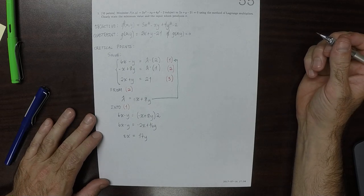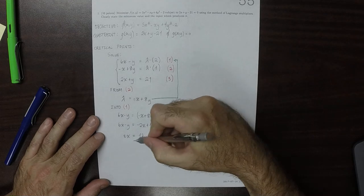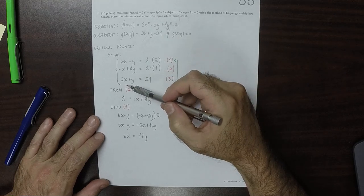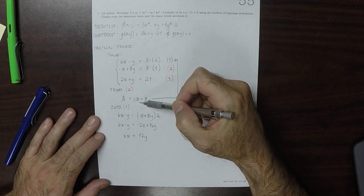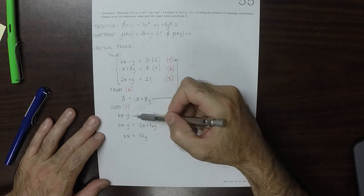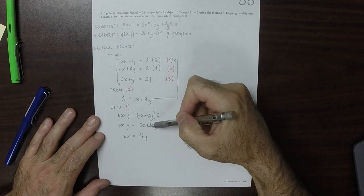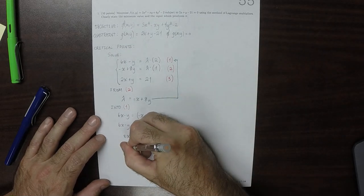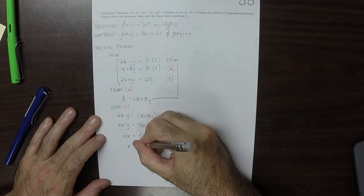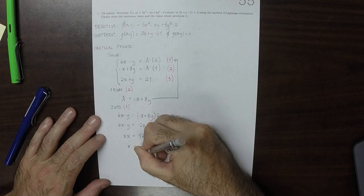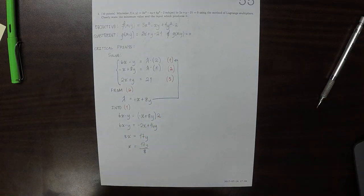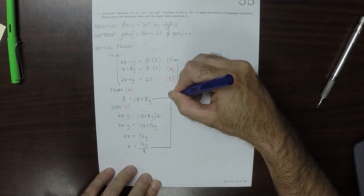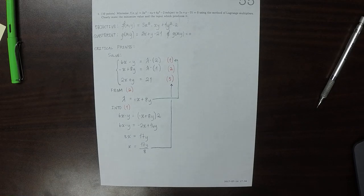Let's verify: 6x minus y... yes, negative y... okay. So we can solve for x: x is 17y over 8. Now we can take this equation and use that information in equation 3.